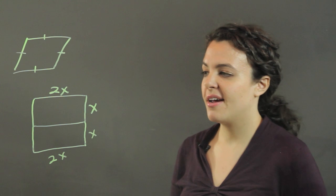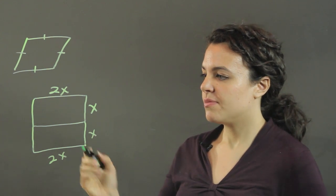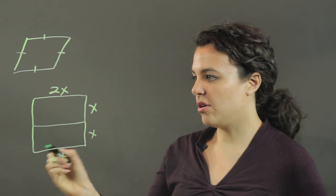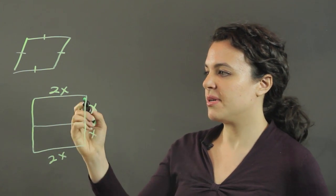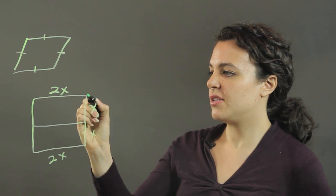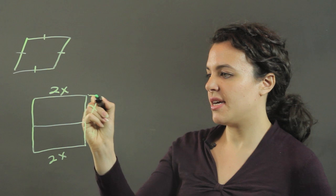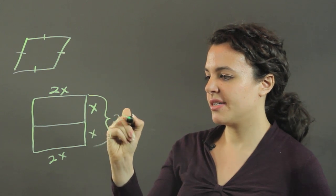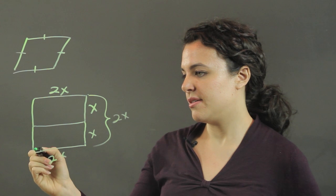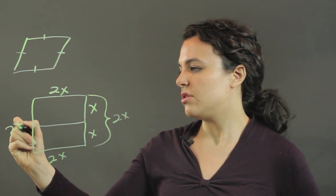And what we have now is all four sides are congruent because this side is 2x, this side is x plus x, which is 2x, and this side is also 2x.